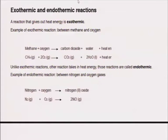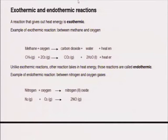An example of an exothermic reaction is when methane burns in oxygen — producing carbon dioxide, water and heat energy. An example of an endothermic process is when nitrogen and oxygen combine to give nitrogen oxide, but they require energy input to combine. With oxidation and reduction, when for example magnesium combines with oxygen, oxidation occurs. But in some reactions oxygen is removed — that is called reduction. Reduction and oxidation processes always happen together, which is why they are called redox reactions.